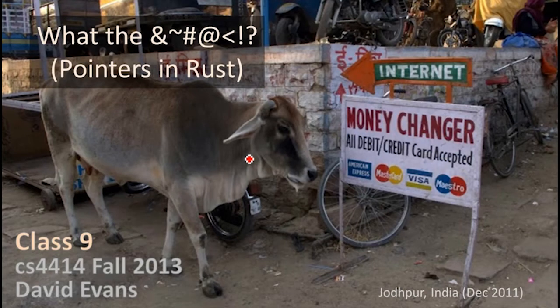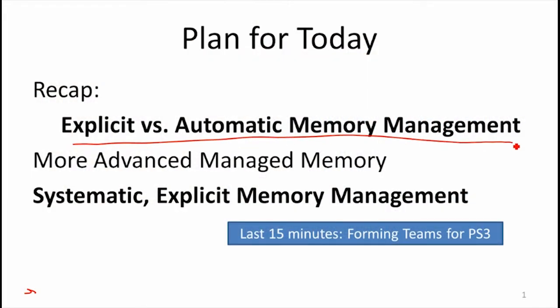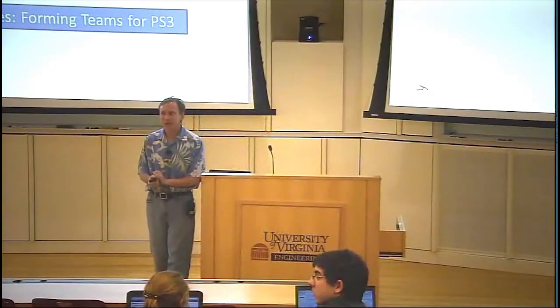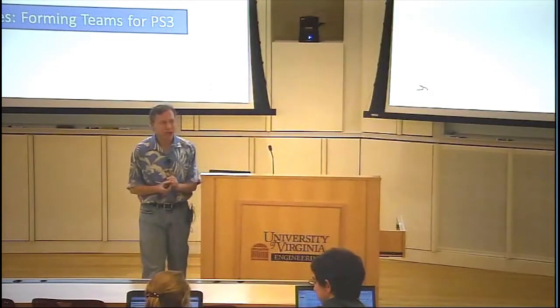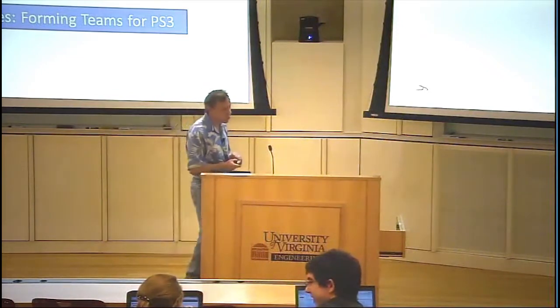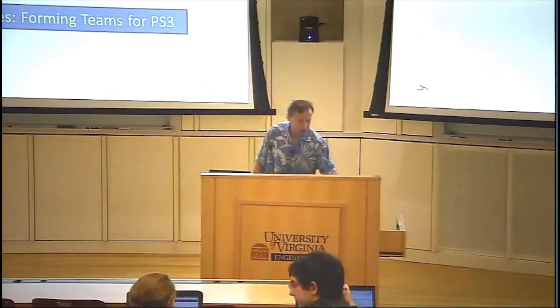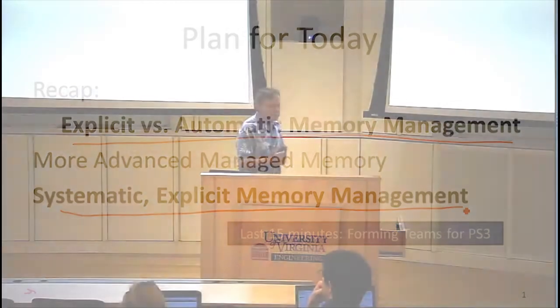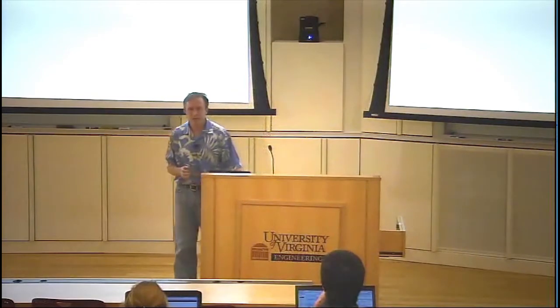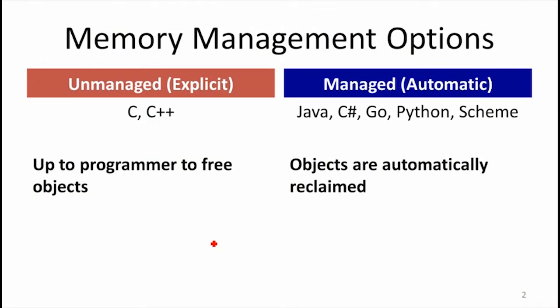We're going to look at how pointers work in Rust, which you've encountered in programs you've written so far. We started talking about whether memory is managed explicitly or automatically and the kinds of issues that causes — the dangers that happen if programs have too much control over memory. What we have in C and C++ is unmanaged memory, where programmers can manage memory how they want, and it's completely up to the programmer to free objects.